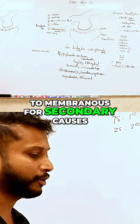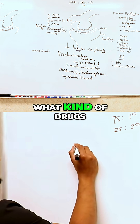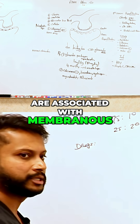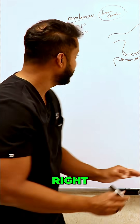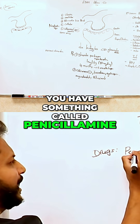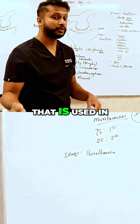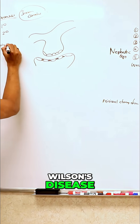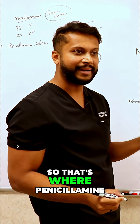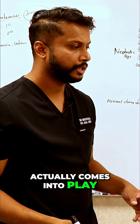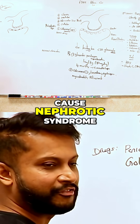When it comes to membranous nephropathy from secondary causes, let's start with drugs. Not penicillins, but penicillamine — a chelating agent used in Wilson's disease. So penicillamine is where that comes into play. Gold salts are also going to cause nephrotic syndrome.